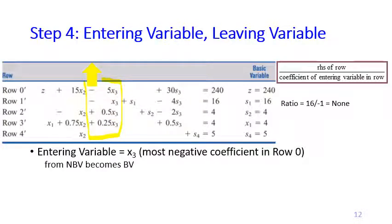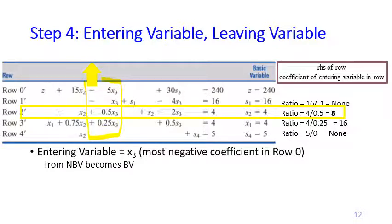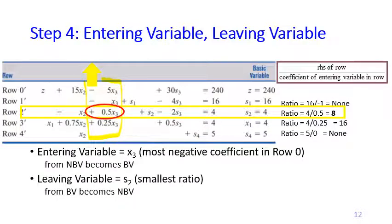Row one: 60 divided by minus 1 — no ratio since we skip negative or zero denominators. Row two: ratio is 8. Row three: ratio is 16. Row four: also none since divided by zero. The smallest ratio among 8 and 16 is 8, so row two wins the ratio test. The leaving variable is therefore s2, at the intersection of entering variable x3 and leaving variable s2.